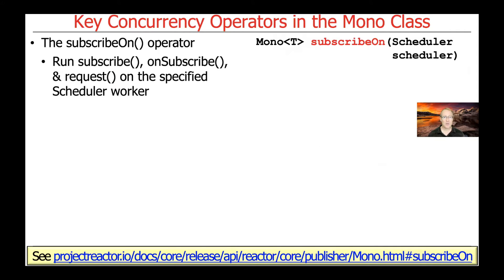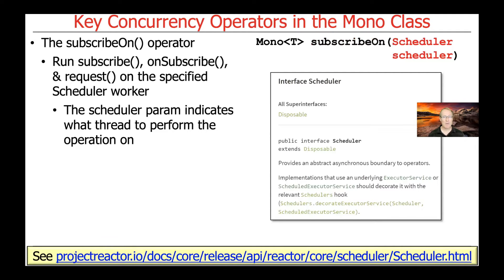Let's first start by talking about the concurrency operator we're focusing on, which is subscribeOn. subscribeOn will arrange to run the subscribe, unsubscribe, and request methods on the specified scheduler worker. The scheduler worker is passed as a parameter to the subscribeOn method, and this scheduler parameter indicates what thread to perform the operations upon.